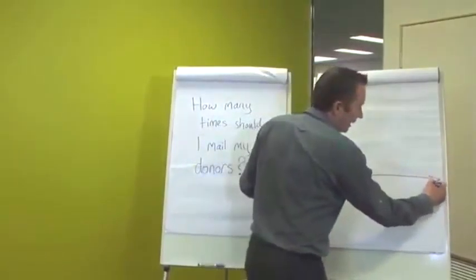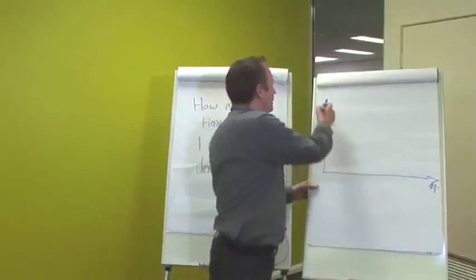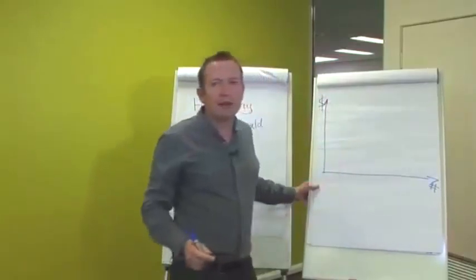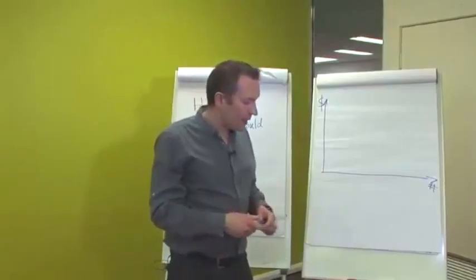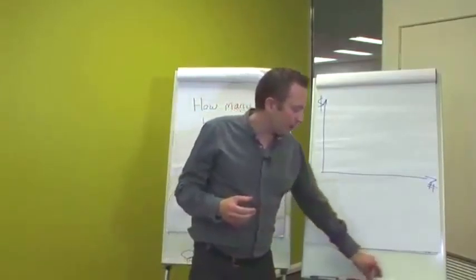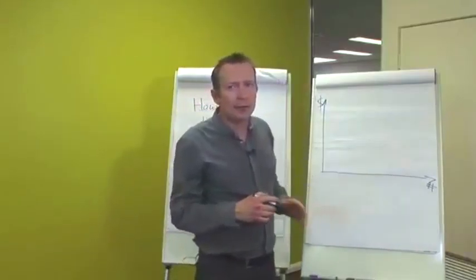And what we can see is generally speaking, if I just draw a nice little chart here, where I've got the number of campaigns here on the horizontal axis, and I've got the amount of money that I'm going to make out of those people through those appeals.